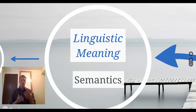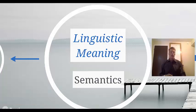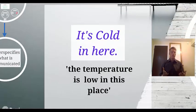Linguistic meaning is often also described as semantics. For example, if we look at the sentence, it's cold in here, we can paraphrase that sentence as the temperature is low in this place. So that's the linguistic meaning. That's the meaning that we get by virtue of the meaning of each word in the sentence and how they're combined together to form the sentence.